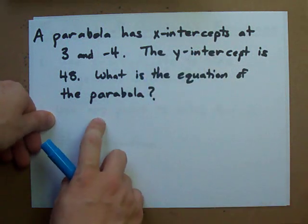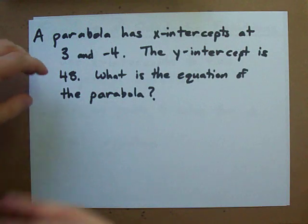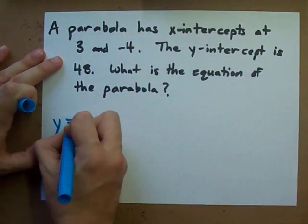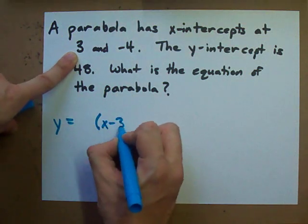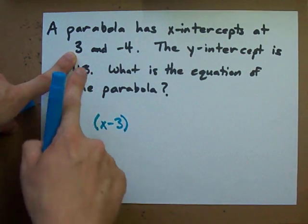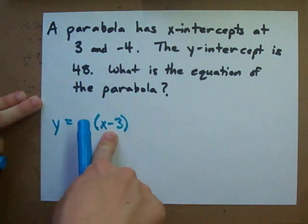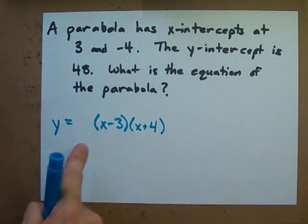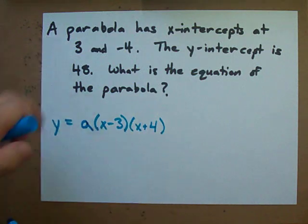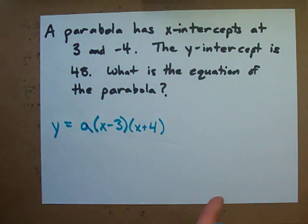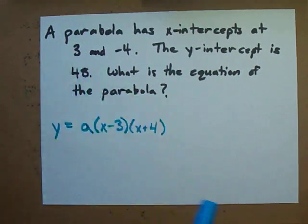Suppose that a parabola has x-intercepts at 3 and negative 4. The general form of the parabola is y equals a times (x minus 3)(x plus 4). The x-intercepts occur wherever the factors are, but we flip the signs — an x-intercept of 3 gives a factor of x minus 3, and negative 4 gives a factor of x plus 4. We call the leading coefficient a for now; this is the general form.